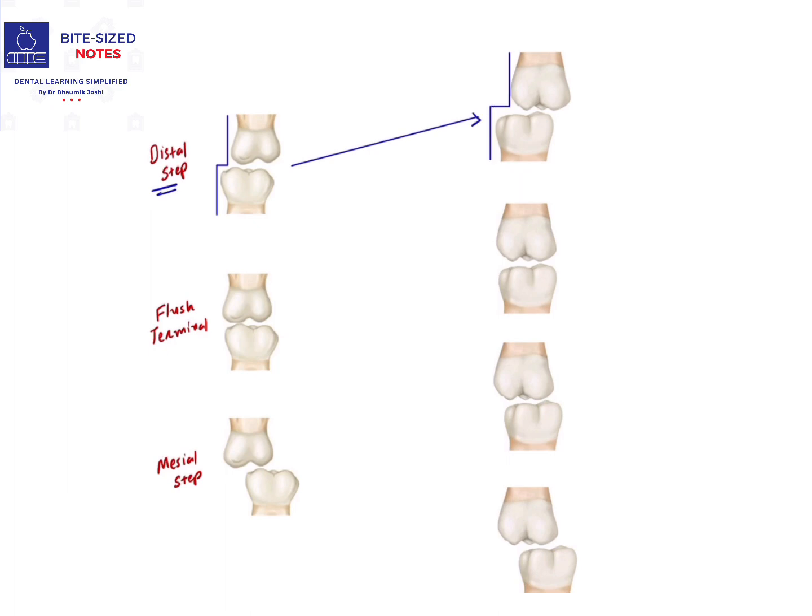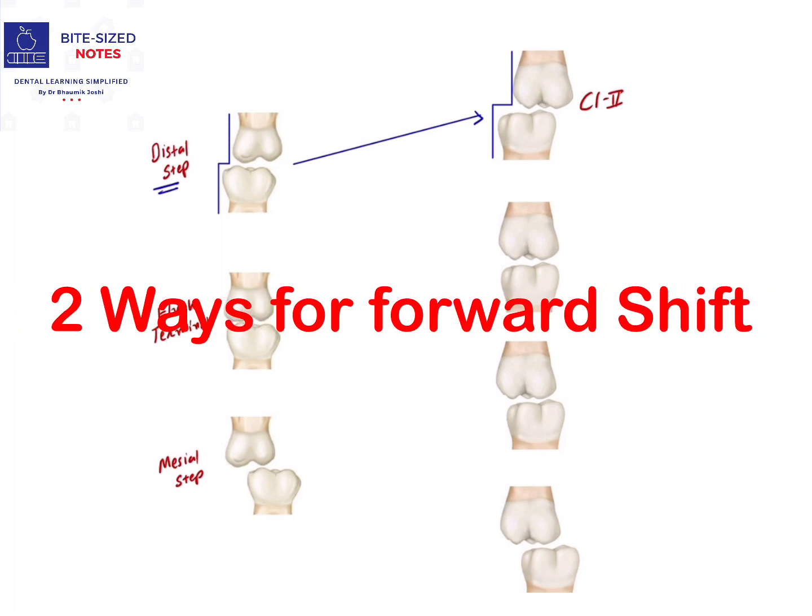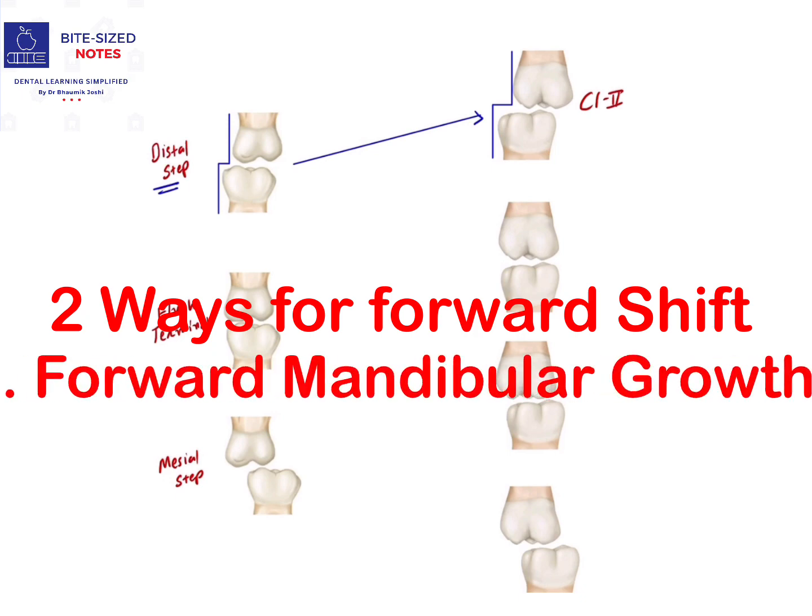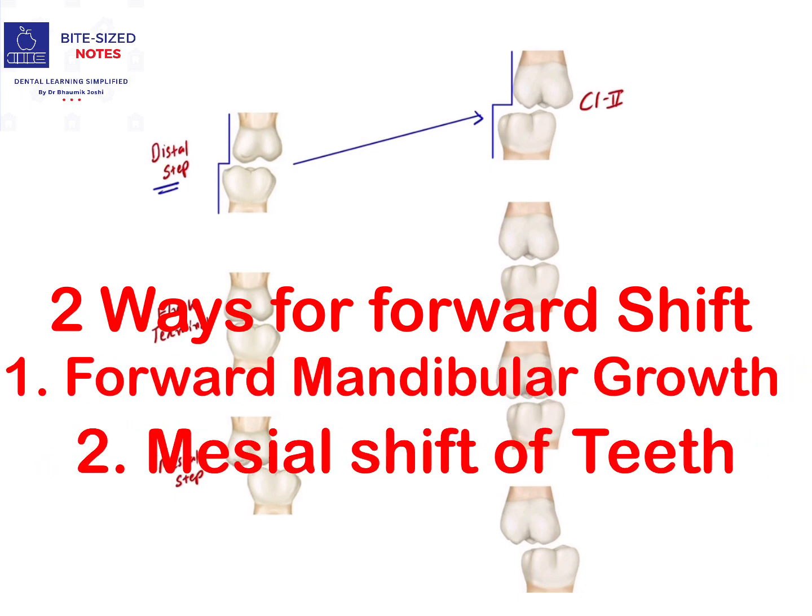This is known as permanent Class 2 relationship. Now there are two ways through which forward shift can take place. The first is when there is growth of the mandible taking place.